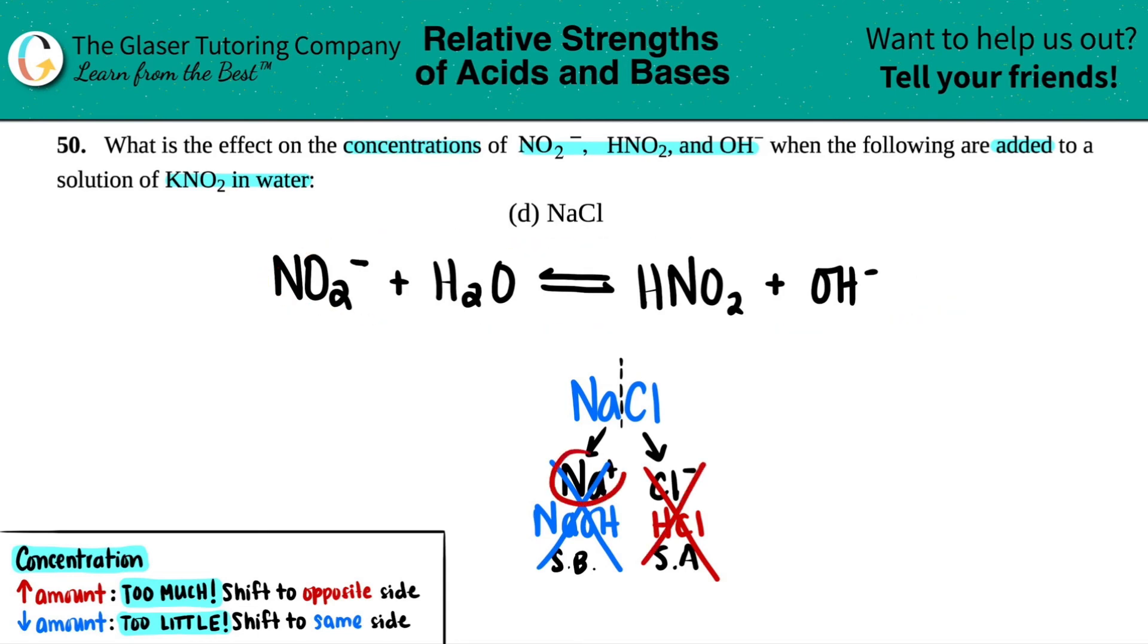So both of these ions, Na plus and Cl minus, would not affect this equation. So there would be no shifts. The reaction would proceed at the same rate that it would, whether you added NaCl or not. So what's the effect on the concentration? No effect. No effect on all of your concentrations. And that's that for that one.